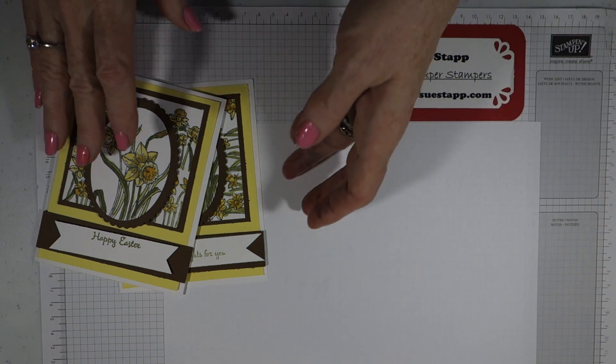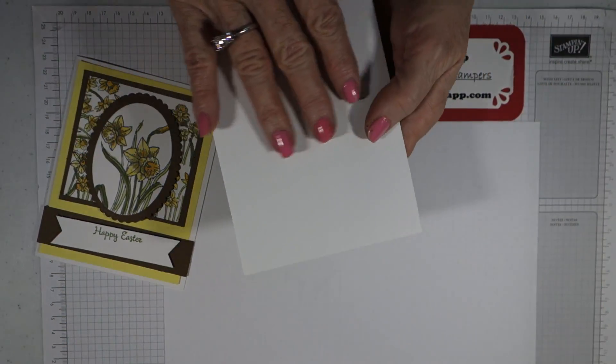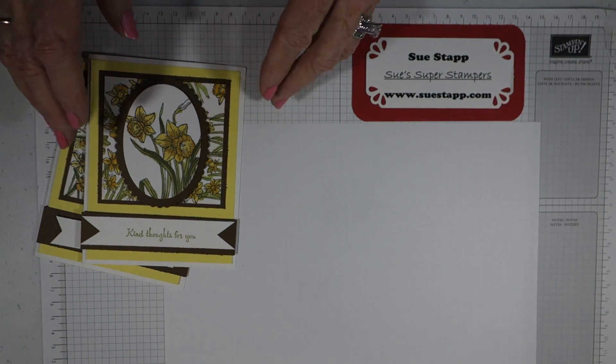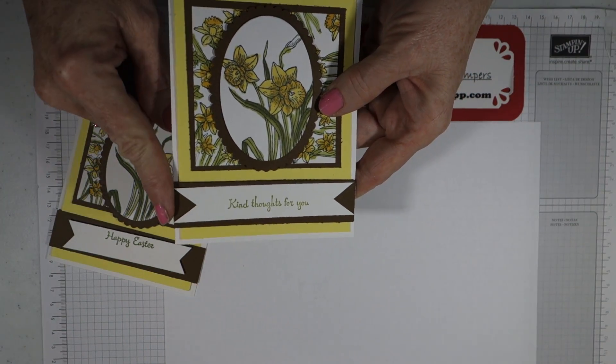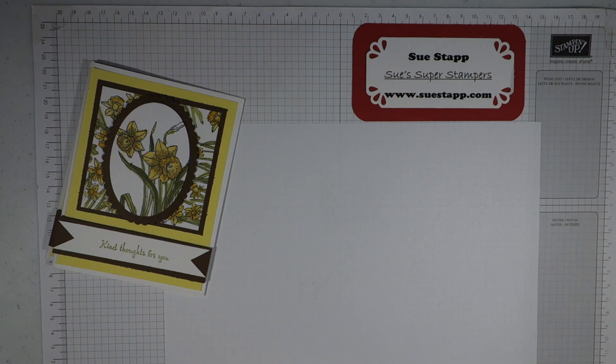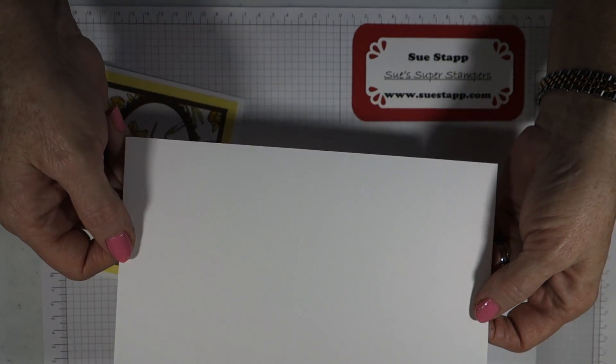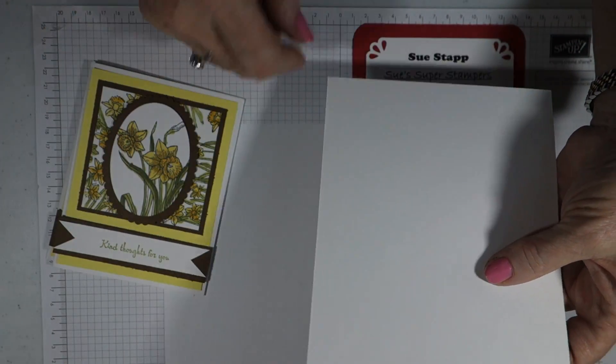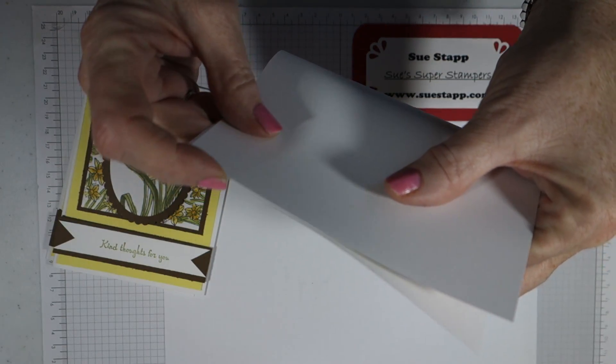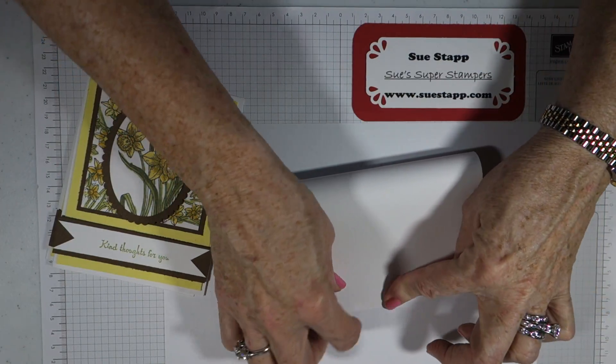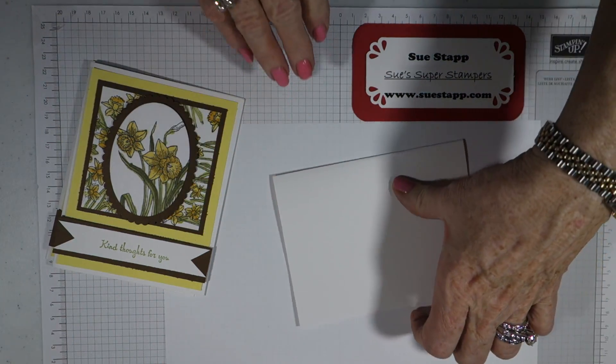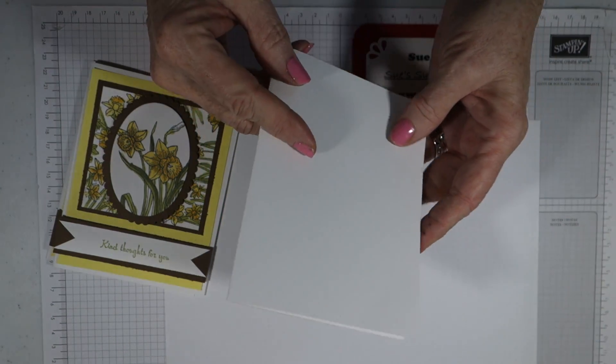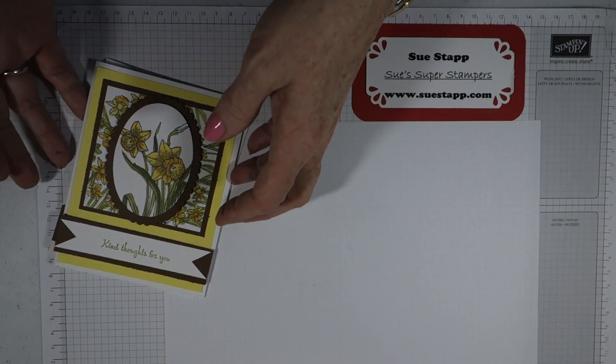Now what we're going to use, this is our standard A2 size card. And you've probably heard me say that word before. And what it means is it is 4 1⁄4 by 5 1⁄2. So if you take an 8 1⁄2 by 11 piece of cardstock, this is Whisper White, and you cut it on the 11 1⁄2 inch side and then fold it, you will have your 4 1⁄4 by 5 1⁄2.